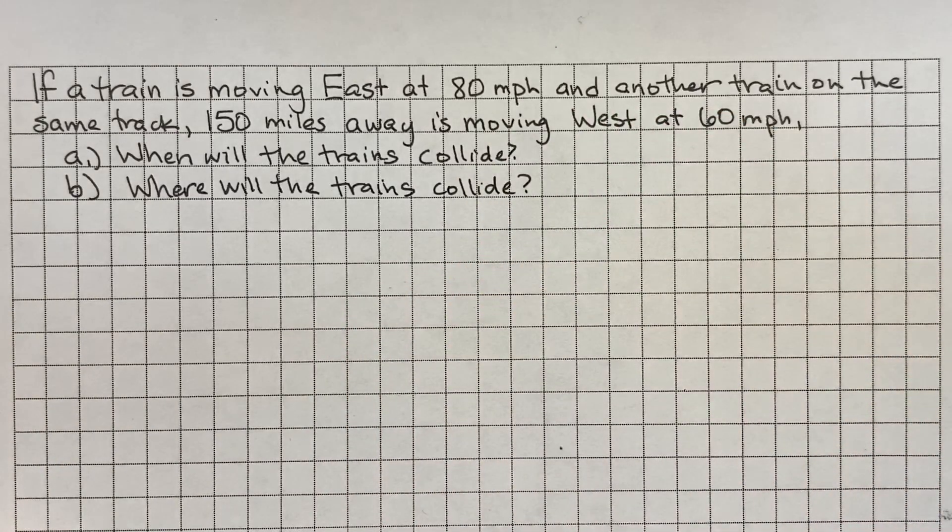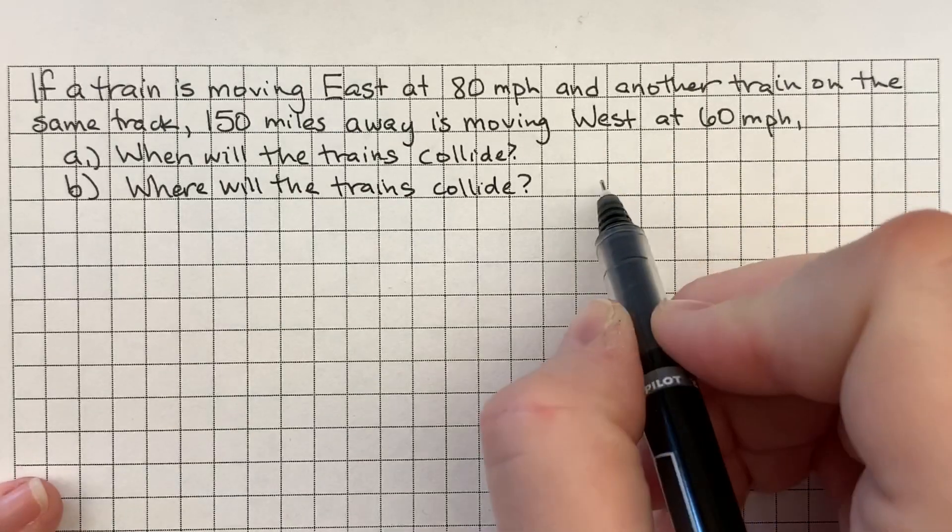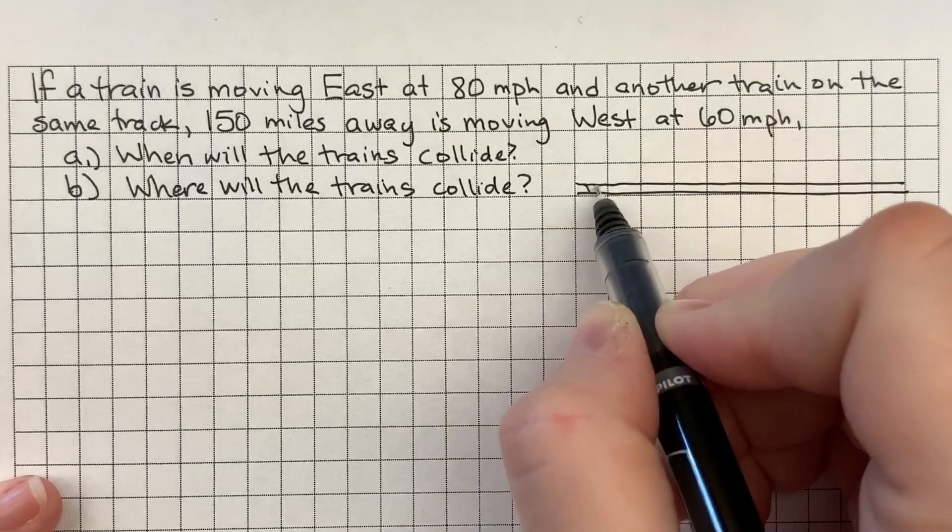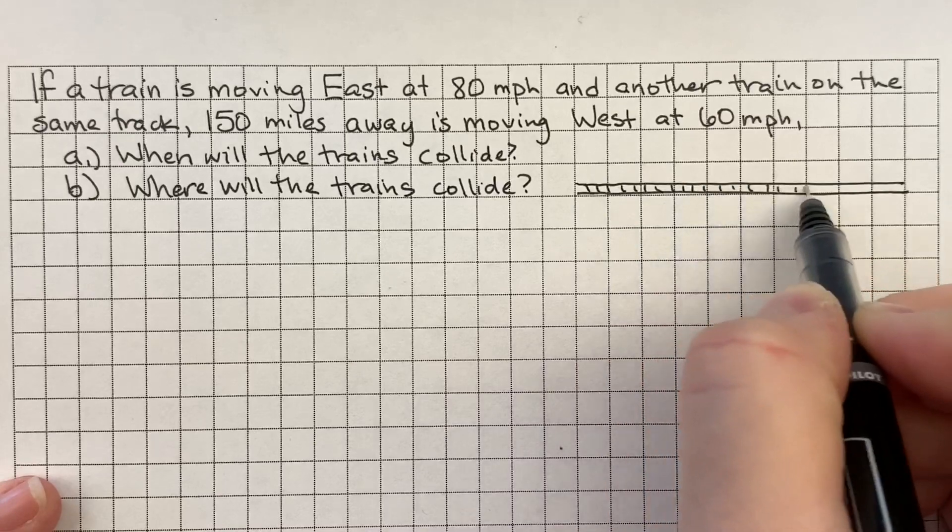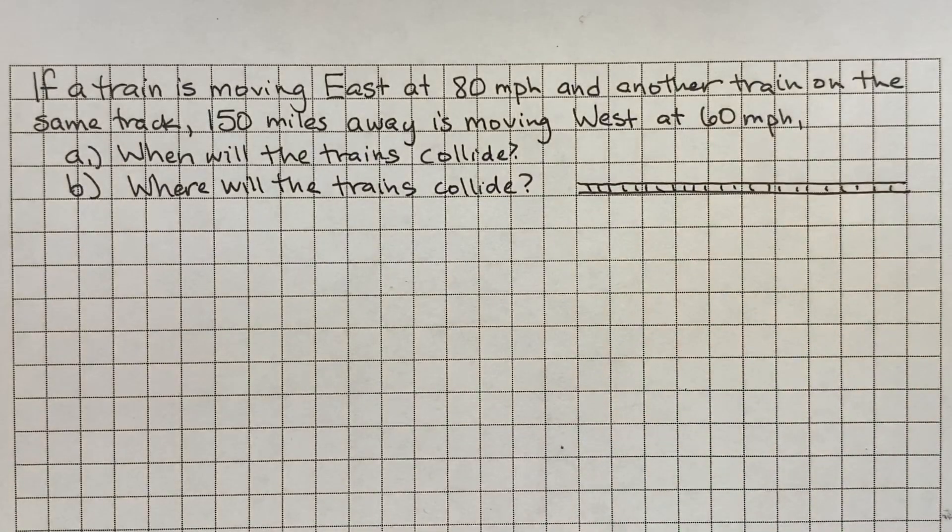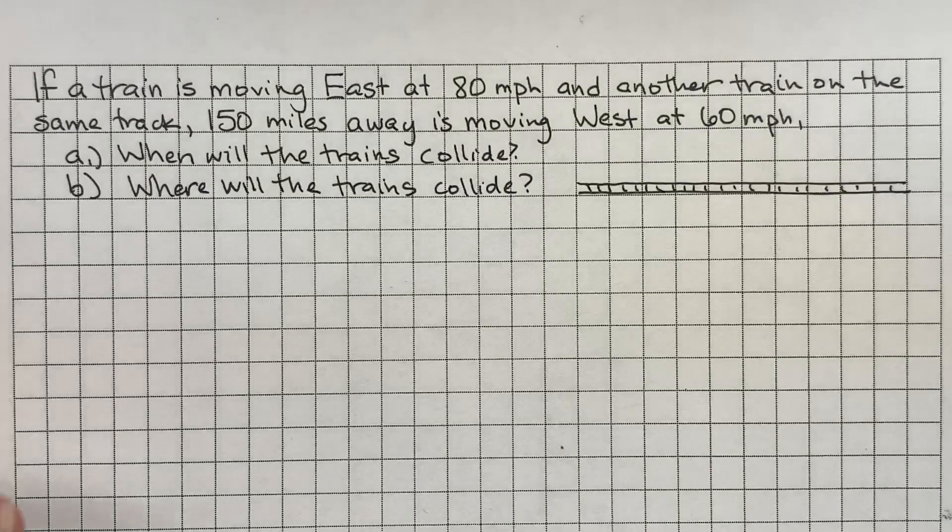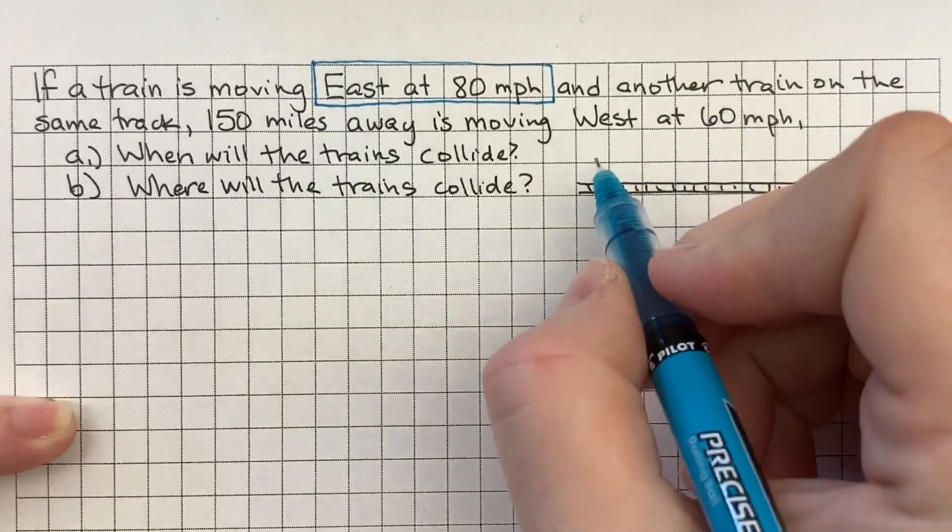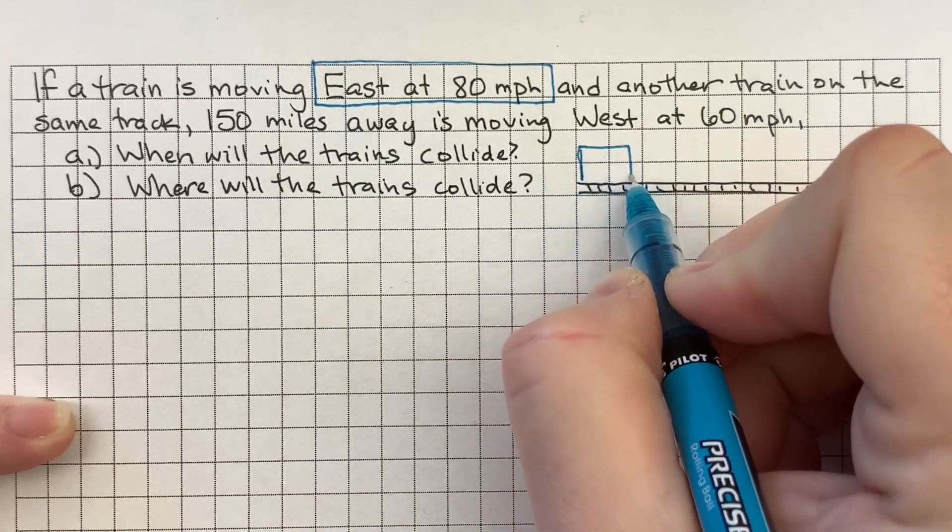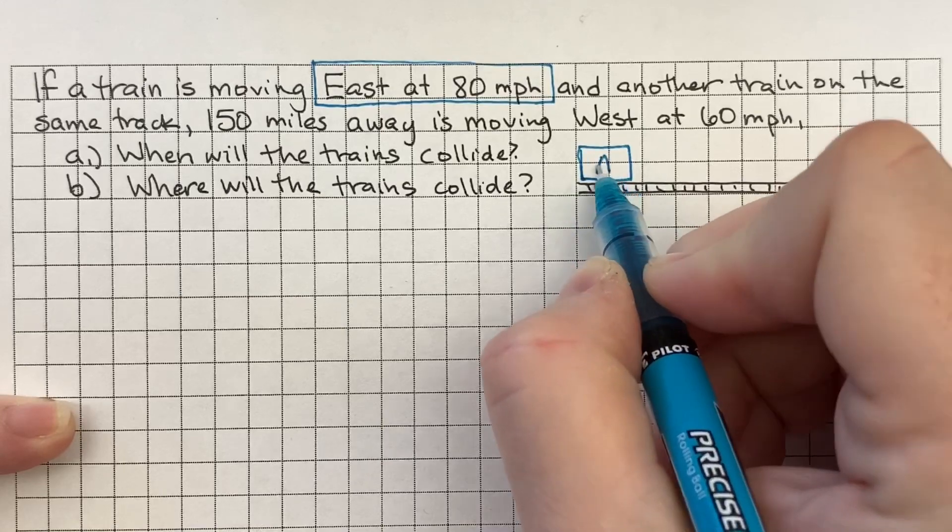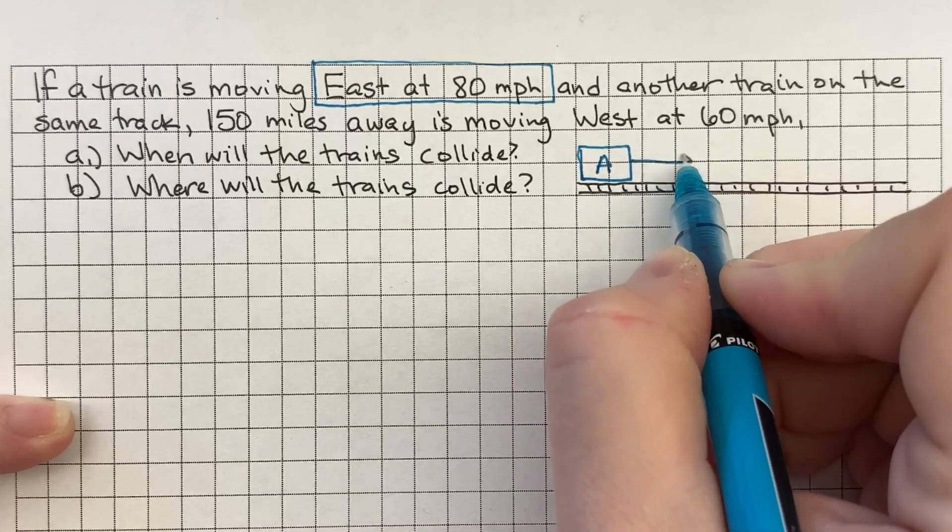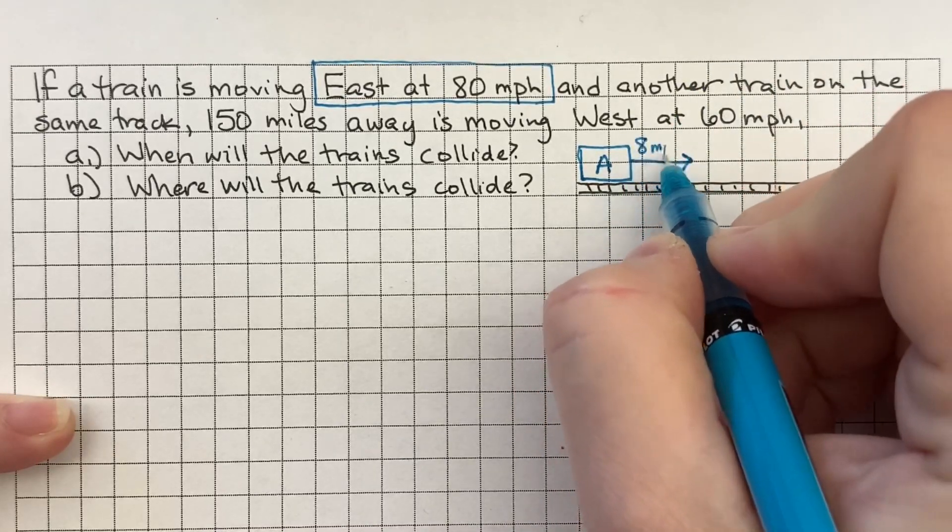Okay, so the first thing I like to do is draw a little picture for myself. So I'll come over here and I'll draw a little train track. And I'm going to color code this problem because I find that color coding really helps me to keep things straight in a problem. So the first train is moving east at 80 miles per hour. So I'll put that train over here and I'll represent it with a box. I'll say that train A. And we'll say that to the right is east. So it's moving this direction at 80 miles per hour.